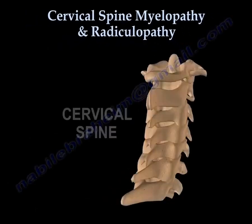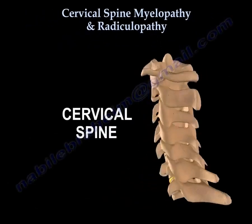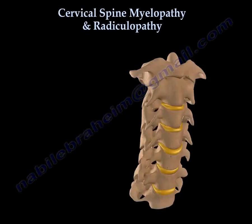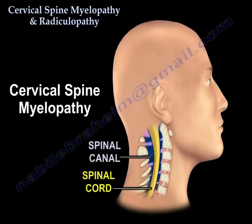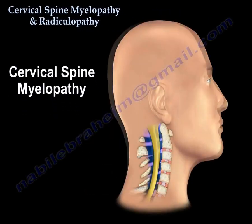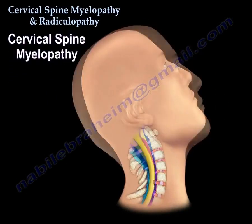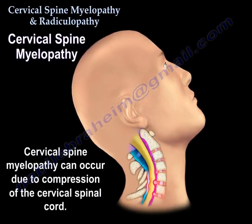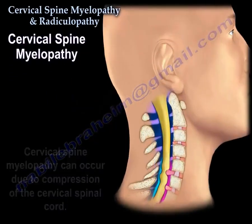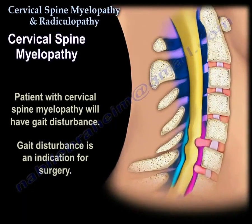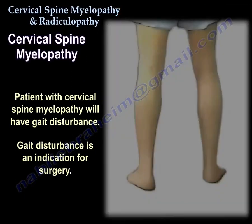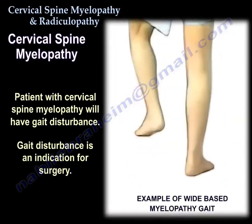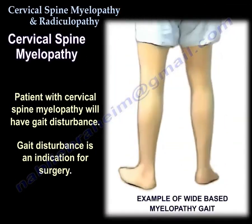Cervical spine myelopathy and radiculopathy. We will start with cervical myelopathy. You will have gait disturbance. Gait disturbance means myelopathy. Once you have gait disturbance, this is an indication for surgery.